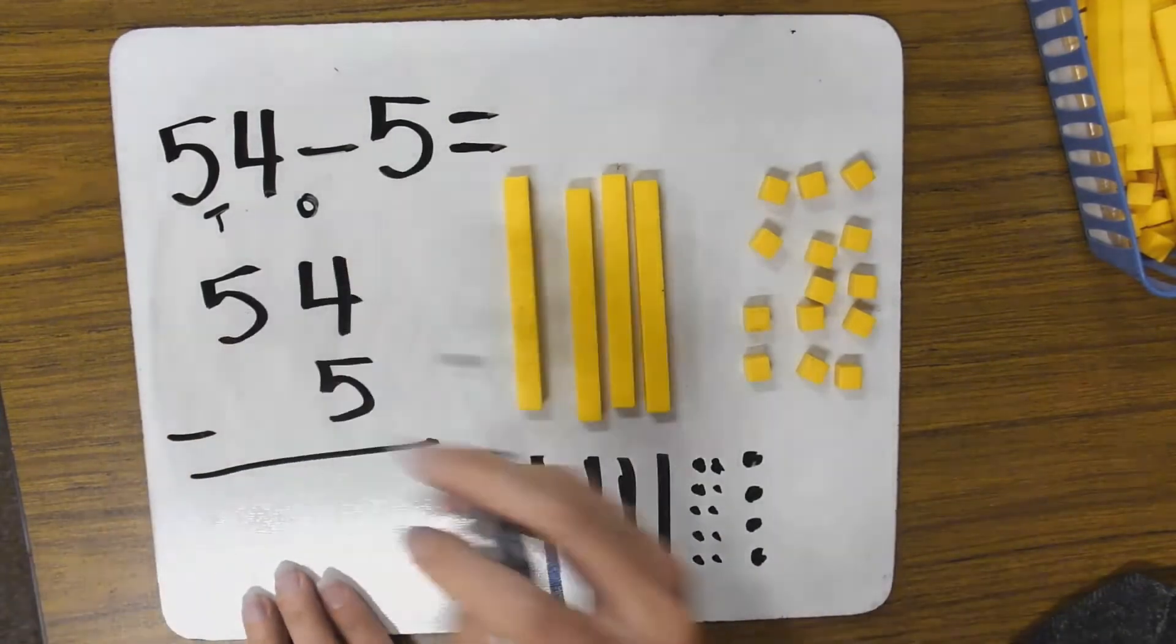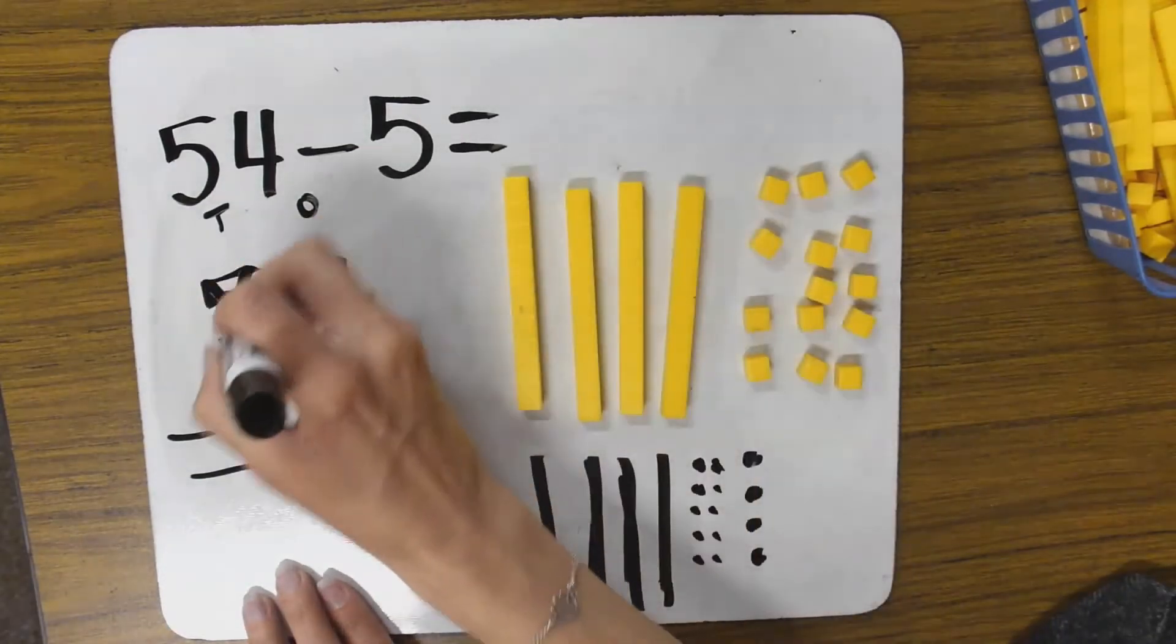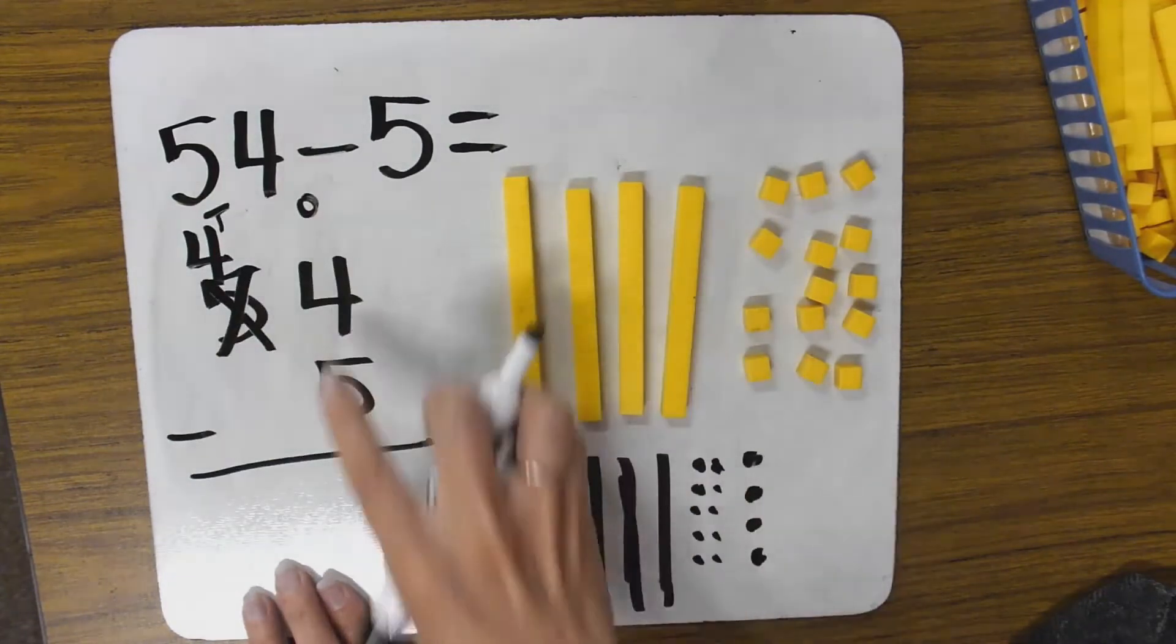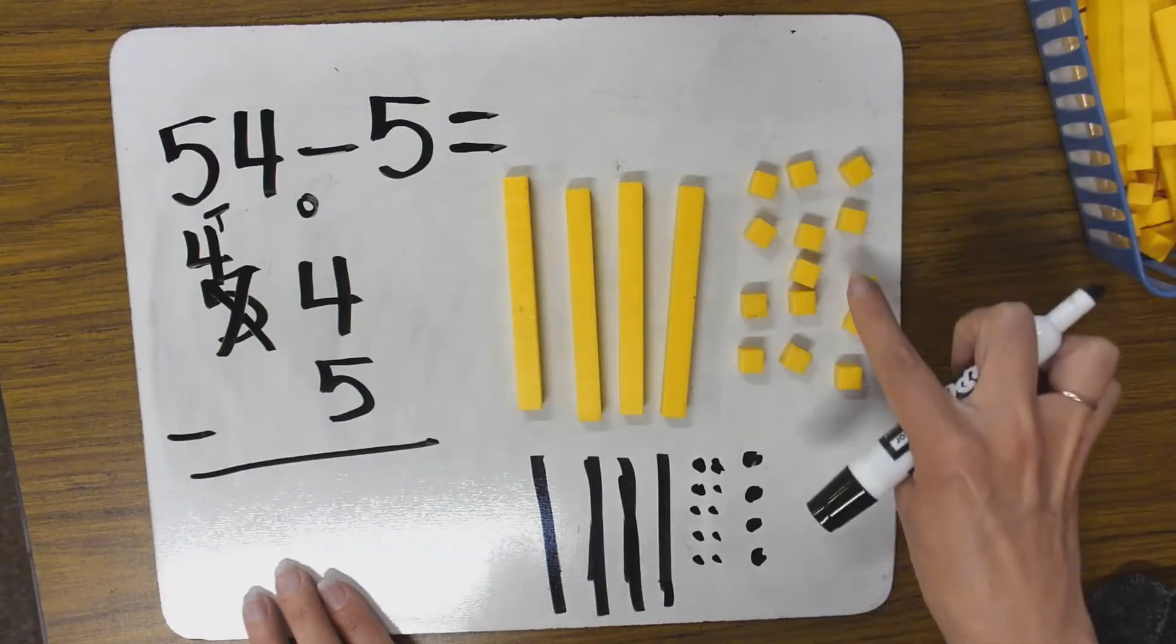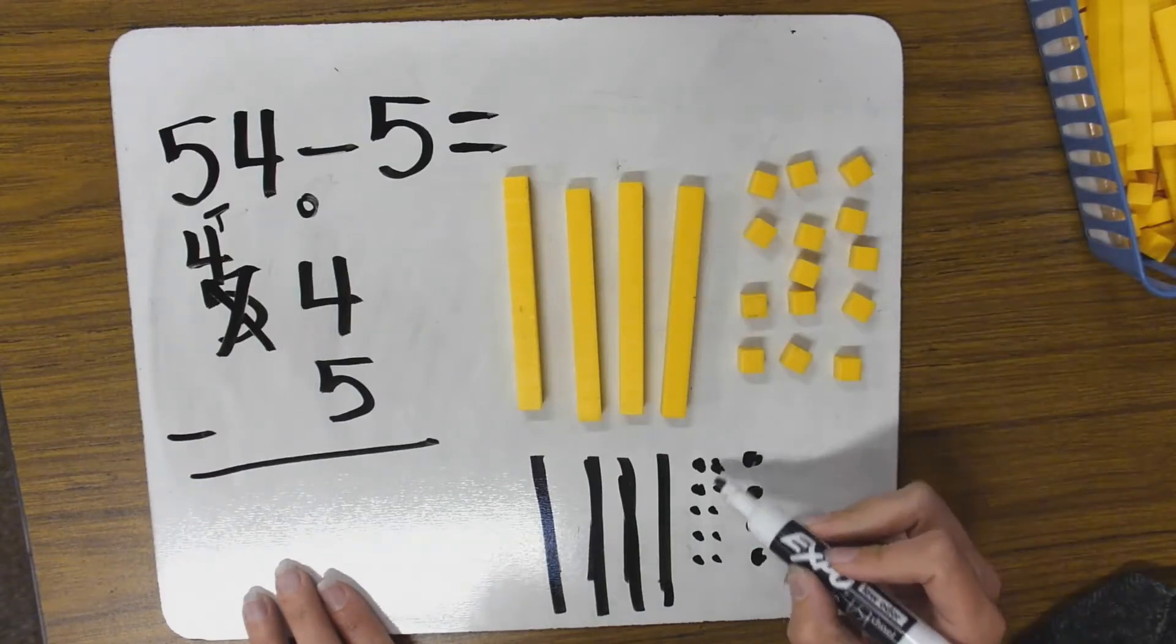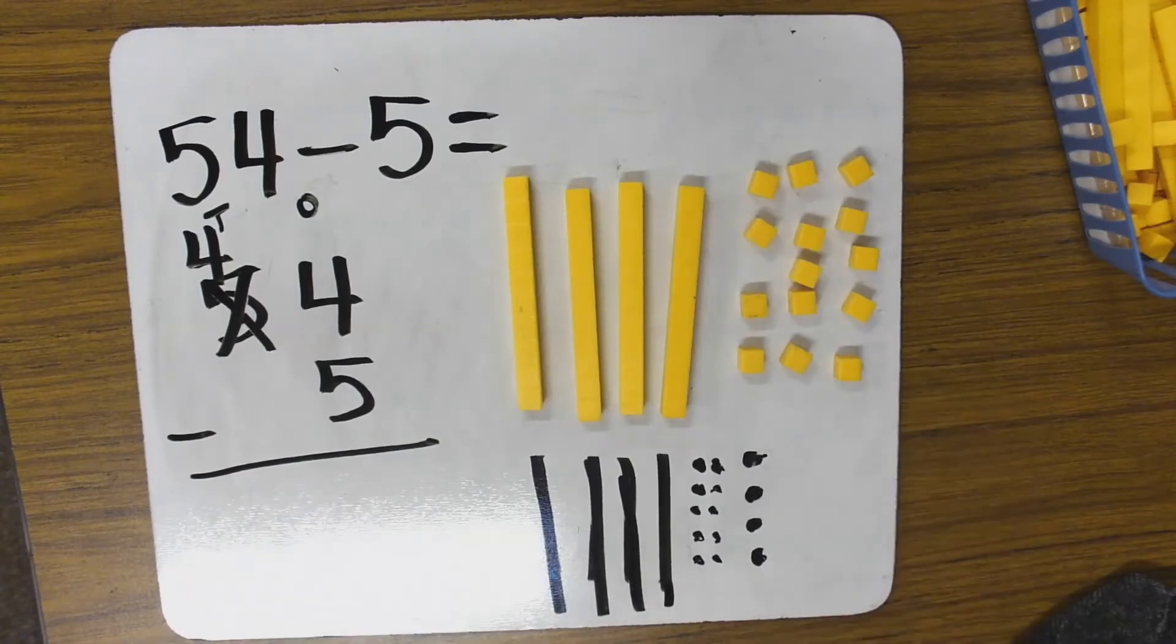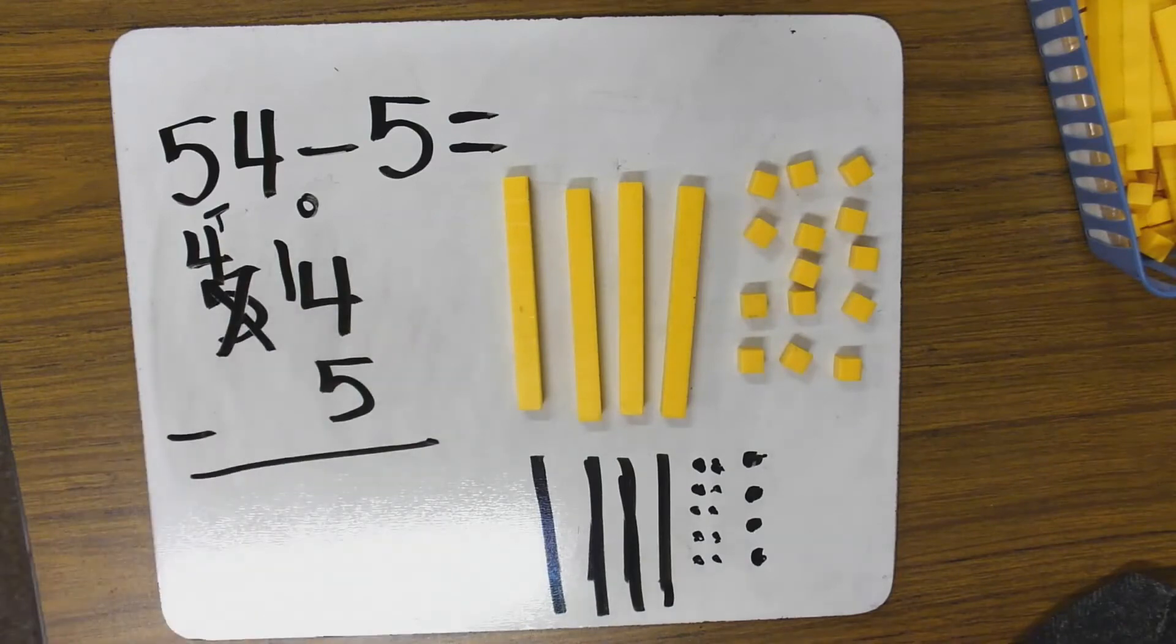Now, what that looks like over here is I traded. So now instead of 5 tens, I have 4. So 4 tens and I traded. So instead of 4 ones, I have 14. I have 14 ones. I can squeeze those 10 ones in here because I left space between the numbers. Now you see why I did that.